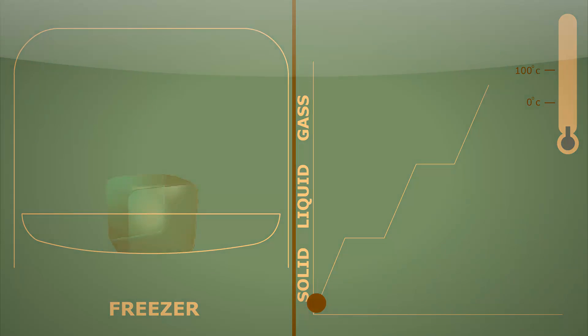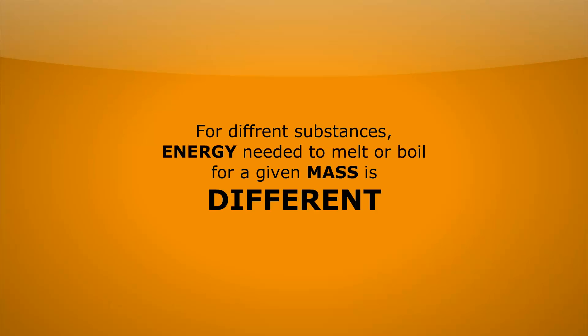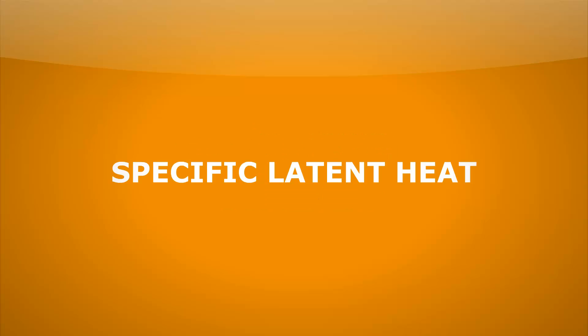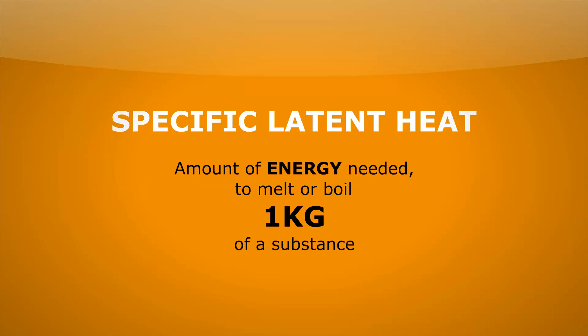In fact, for different substances, the amount of energy needed to melt or boil a given mass is different. And we physicists like to give this a fancy name and we call it specific latent heat. It's essentially the amount of energy needed to boil or melt one kilogram of a substance.